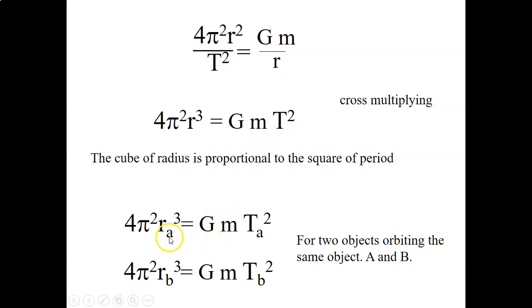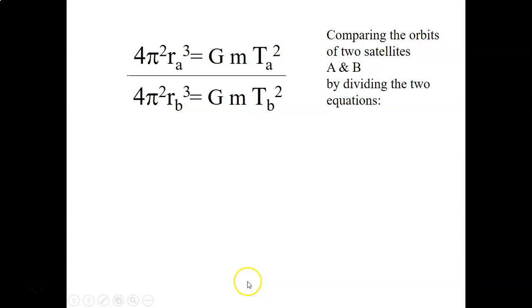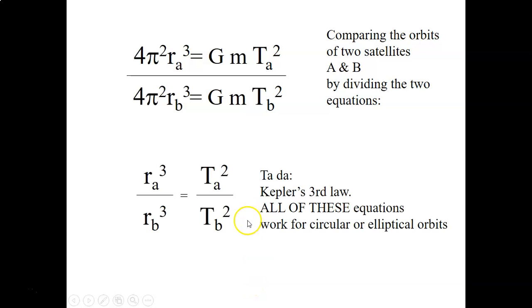Now if we consider two objects, object A that has a certain radius and a certain period, and object B, which has a certain radius and a certain period, if I take these equations and then I divide them, what I get is that the cube of the radii is proportional to the square of the period. That sounds familiar. That sounds like one of Kepler's planetary laws, and that's because it is. So that's basically showing why that's true.